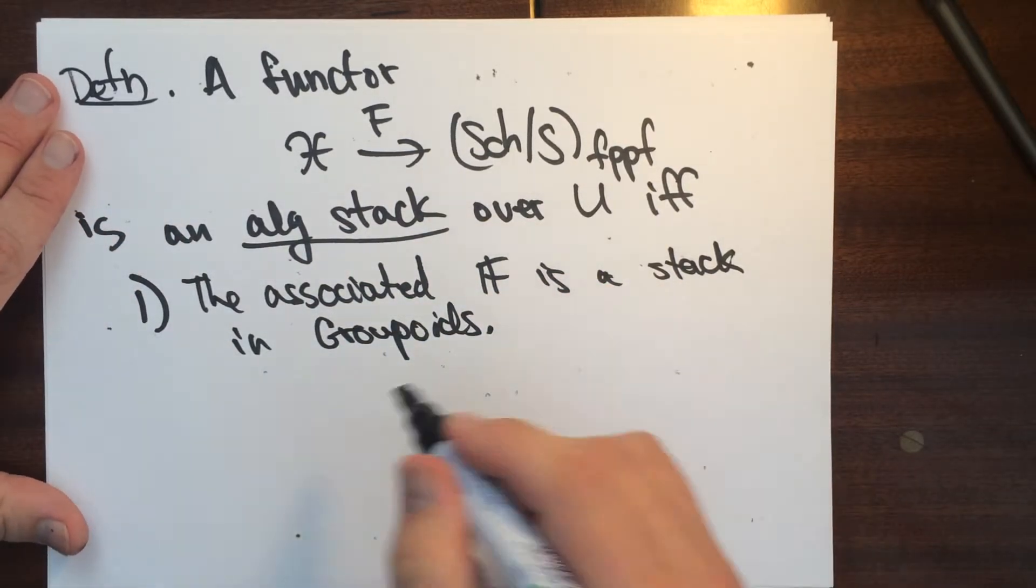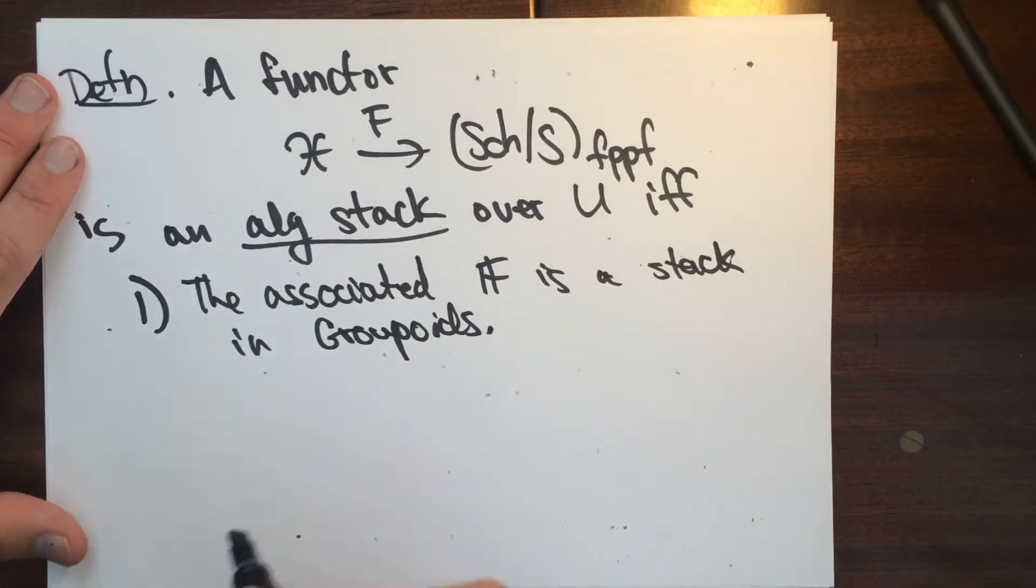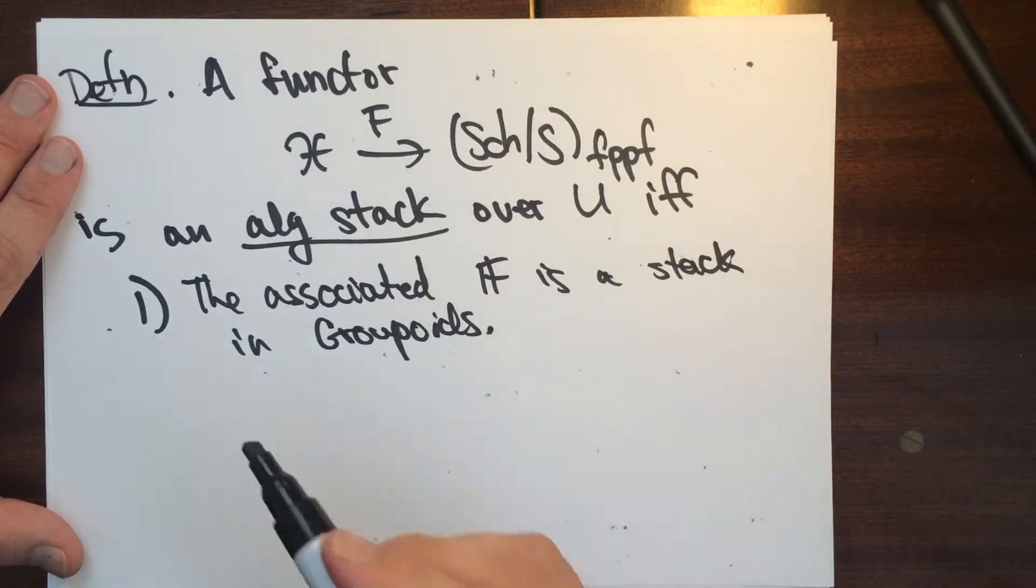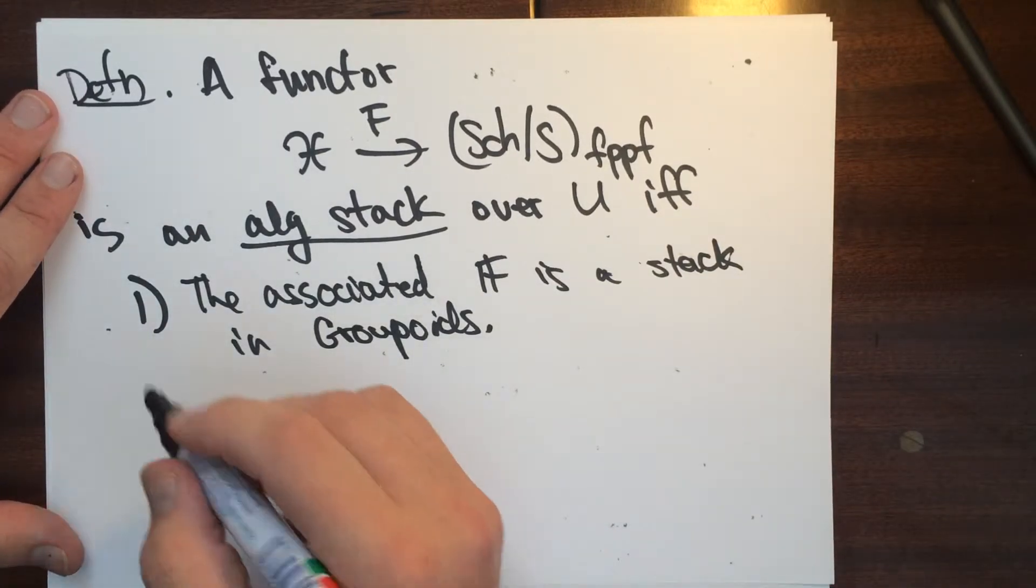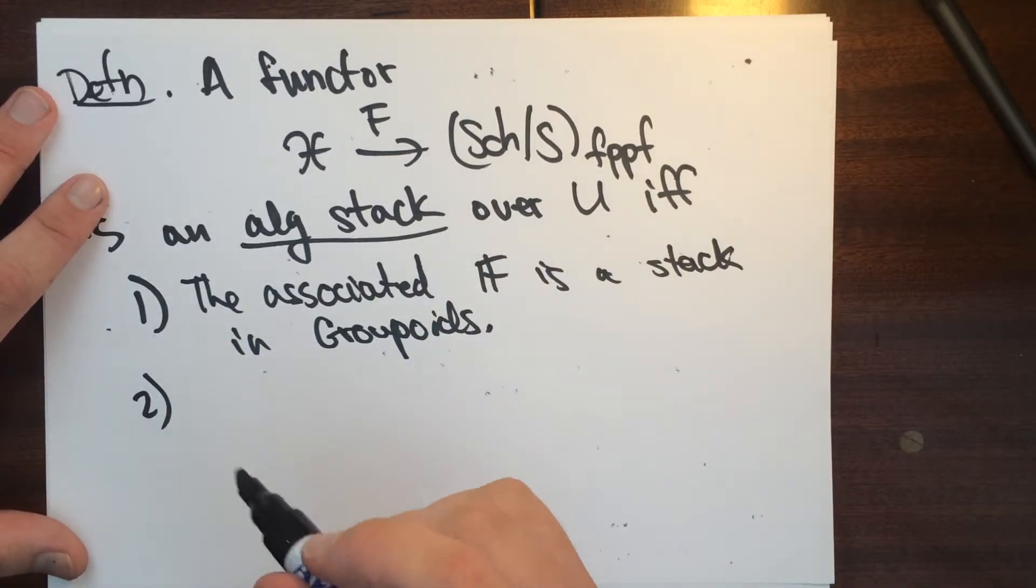Okay, so this is the definition of this stack that we know. Okay, this is almost like a gerb except for we don't have some, we don't have like a local triviality condition or like the existence of local sections. So it's jerby. Okay.